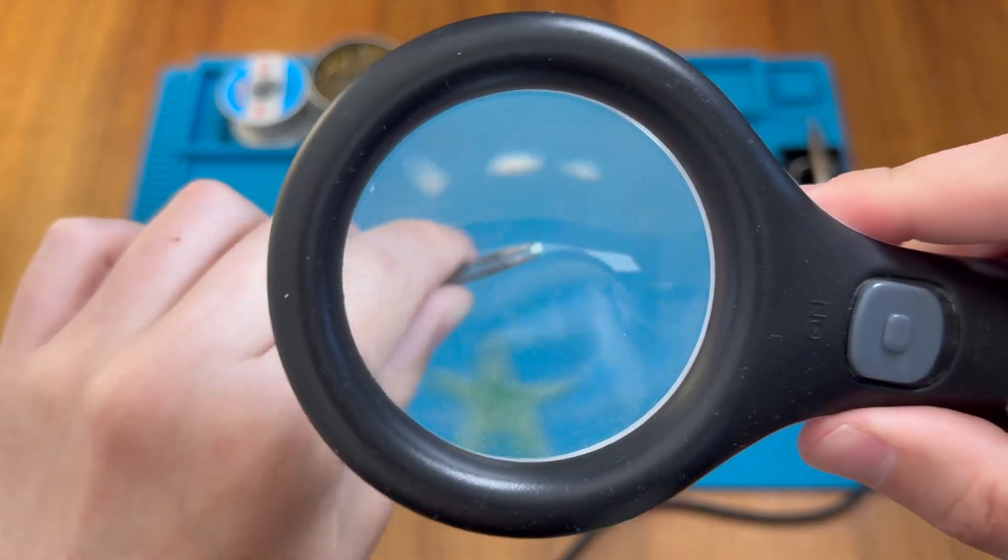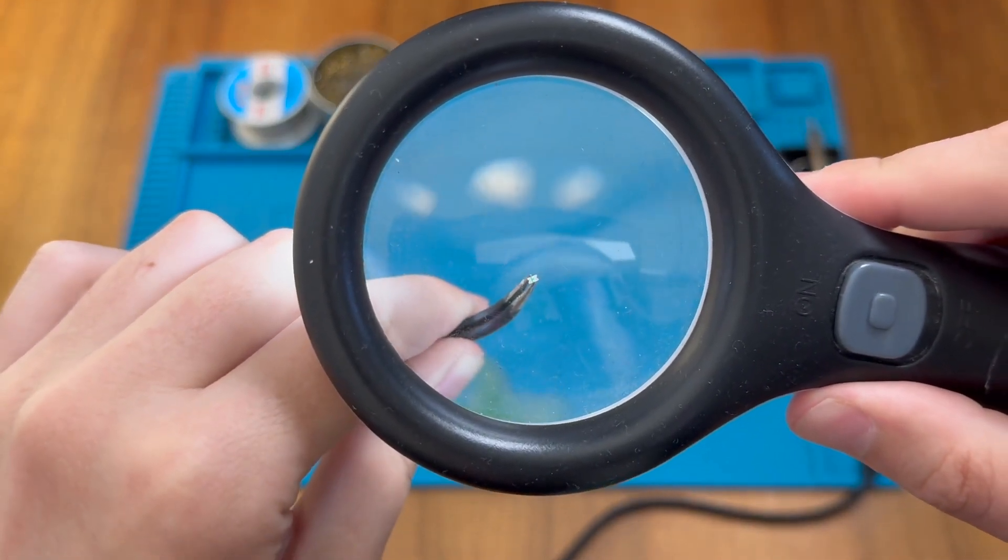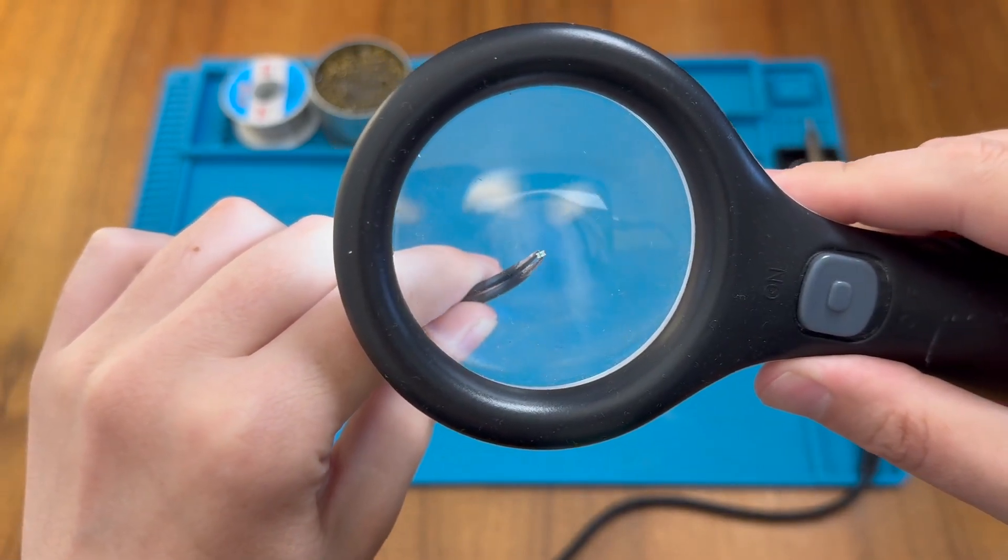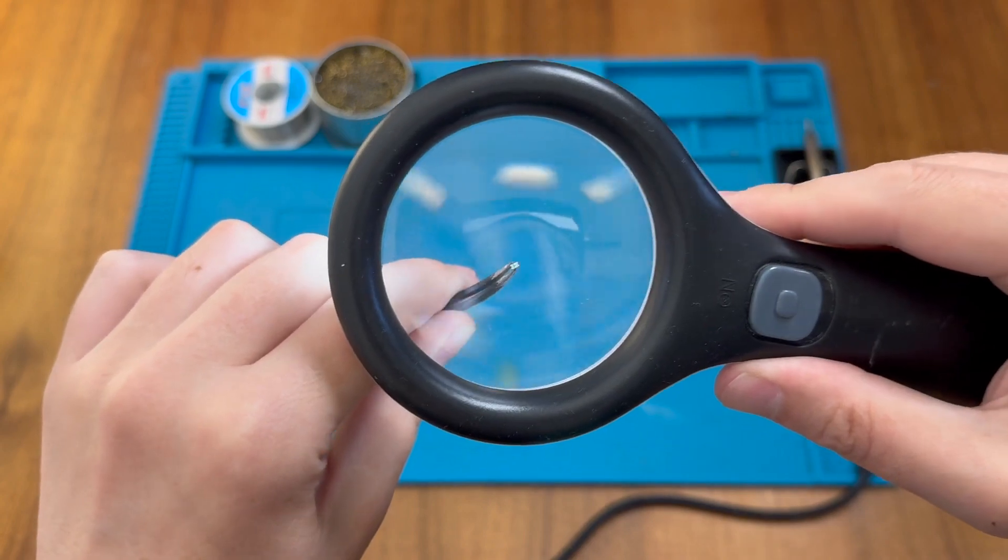So we do have our LEDs here and hopefully you'll be able to make out there is a small marking on the back to indicate the polarity. But of course we can always double check that by using a multimeter and I'm just going to try that now.